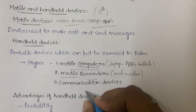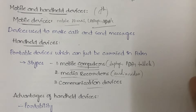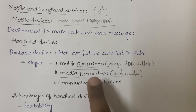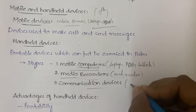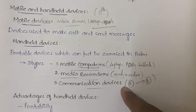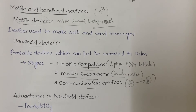The third type is communication devices — landline telephones, cordless telephones, mobile phones, walkie-talkies. These are devices through which you can communicate from one person to another.